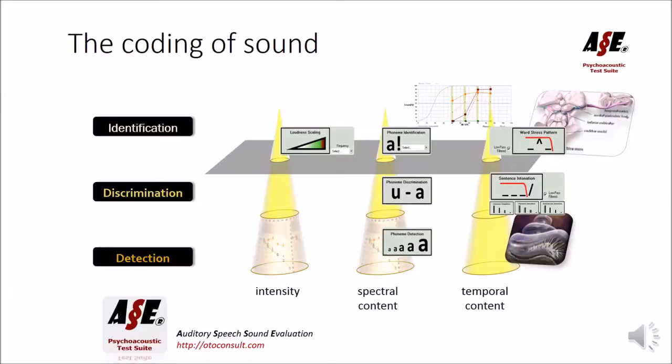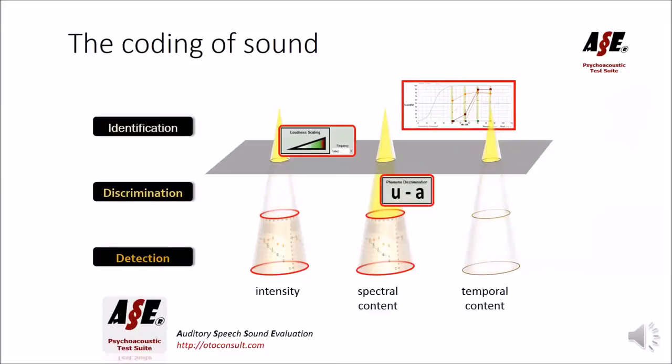For the purpose of cochlear implant fitting, these tests in our hands are most relevant: audiometry, speech audiometry, and for the coding of intensity we use loudness scaling. For the coding of spectral content we look at the spectral discrimination task of ASE, which is the phoneme discrimination task. You see that there is no test for temporal coding because current cochlear implants hardly convey any temporal information. We do use these tests for the assessment of electro-acoustic stimulation or purely acoustic stimulation by means of hearing aids or in the unaided situation.